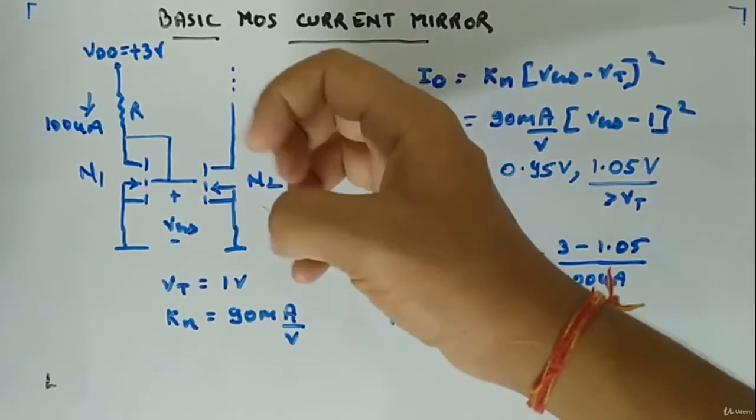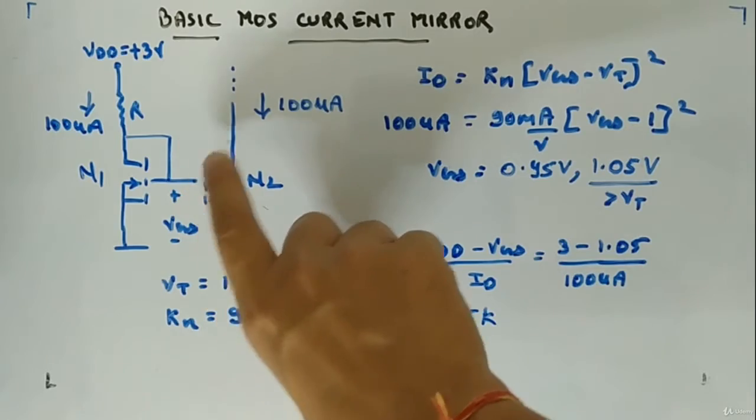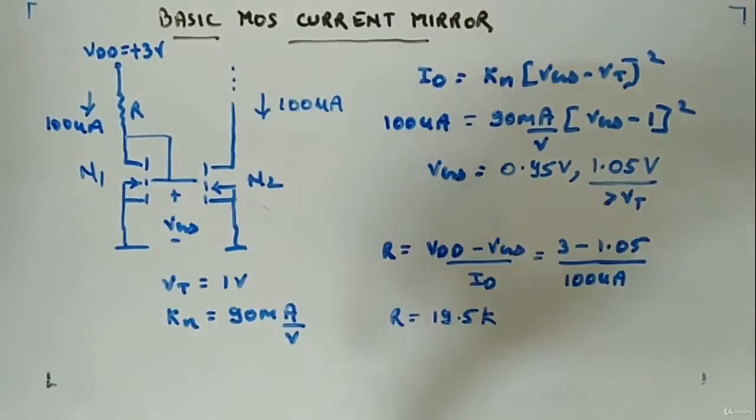So this current will be zero, this current will be zero, this current will be zero. So all the current will be flowing from drain to source, drain to source.